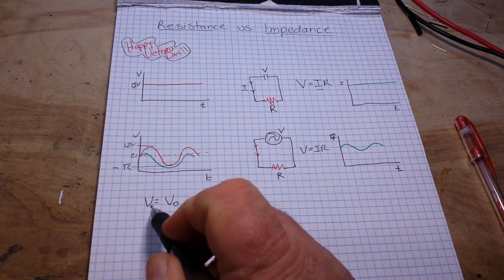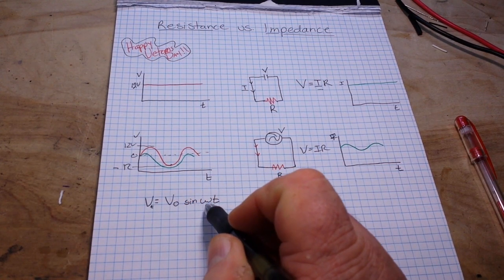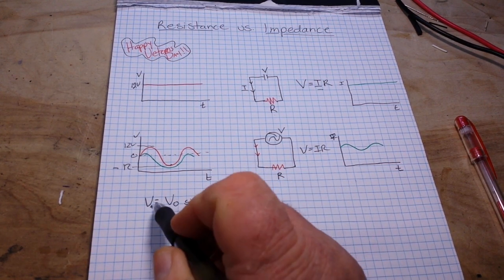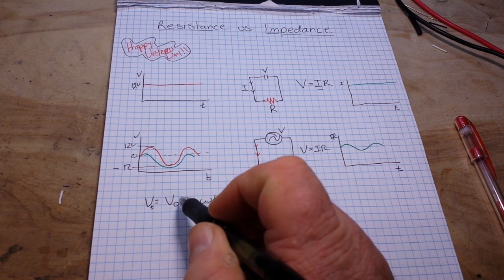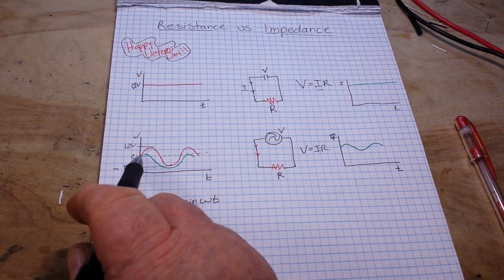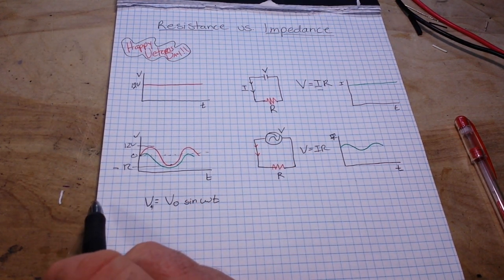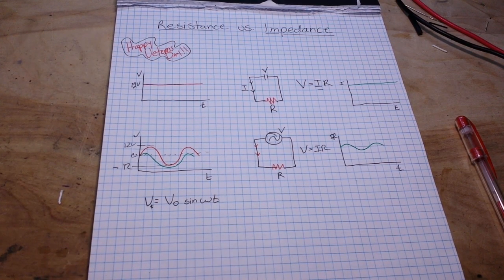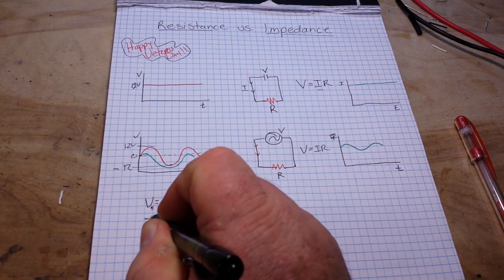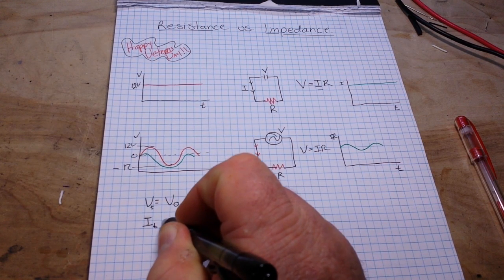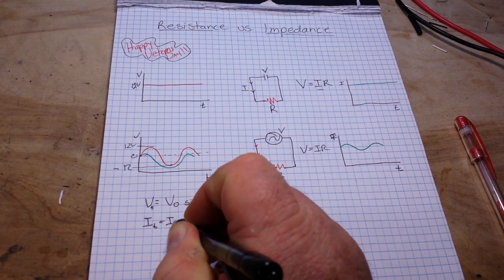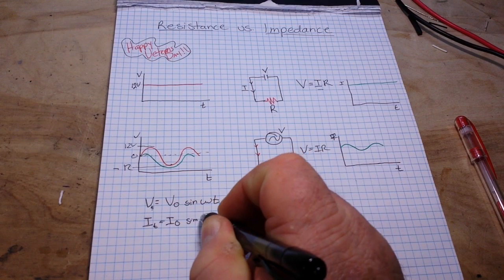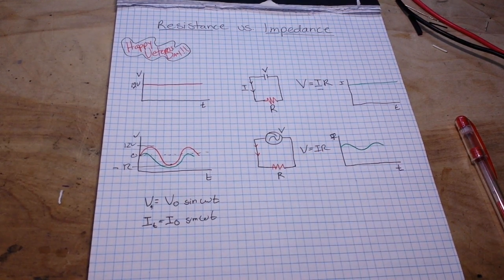So what that means is omega T at any time. So our voltage at time is equal to voltage V0 times the sine of any time T. And the same applies for the current equals I0 sine omega T.